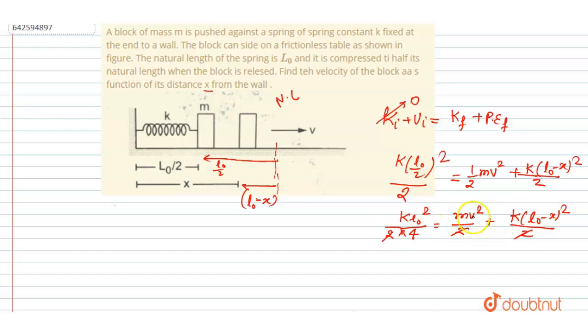So just bring this V to one side and x to one side. What we will write is MV square equals to K L0 square by 4 minus K L0 minus x whole square.